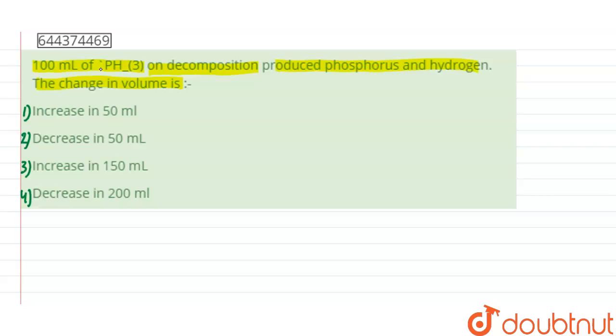So here, given that two molecules of phosphine, that is PH3 in gaseous state, gives three moles of H2 gas plus two moles of phosphorus solid. Now from here we can easily say two moles of phosphine gas gives three moles of H2 and two moles of phosphorus solid.